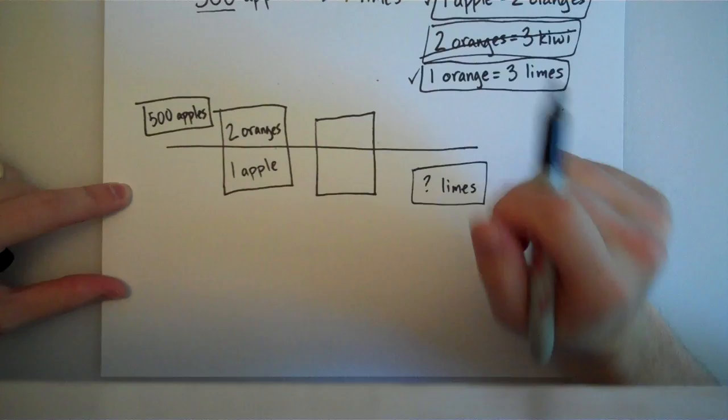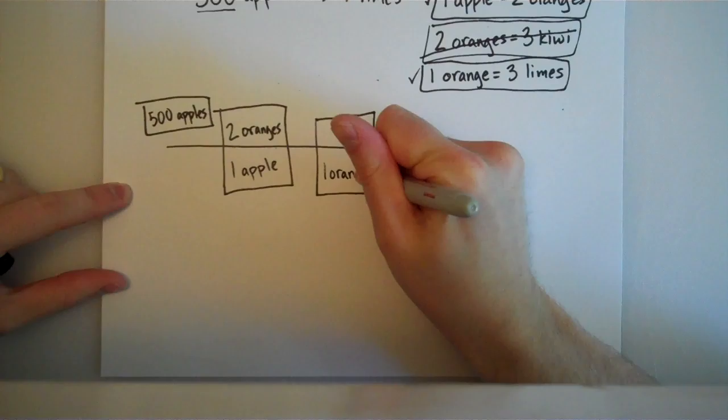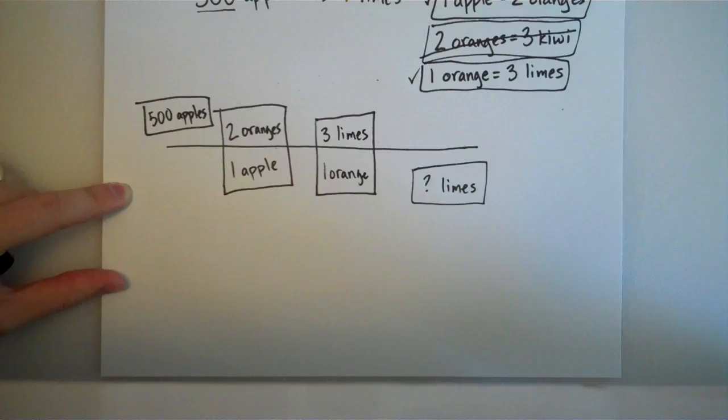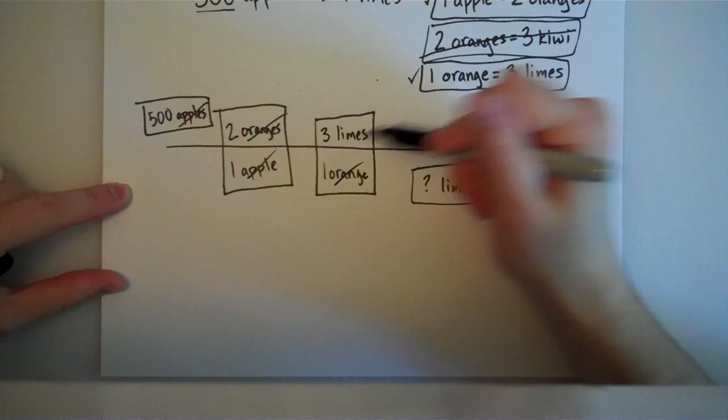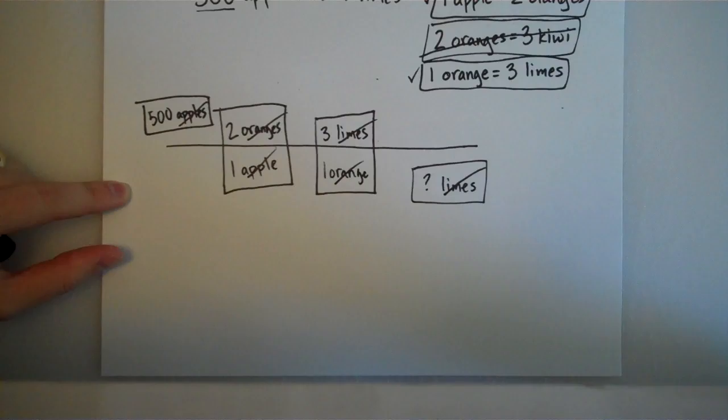So, if I write my one orange here on the bottom, then I can go ahead and write three limes up here on top. Now, you'll notice apples cancel apples, oranges cancel oranges, and limes cancel limes. That means I can go ahead and stop my problem now because I've canceled all of my units out.